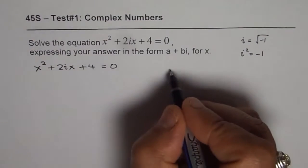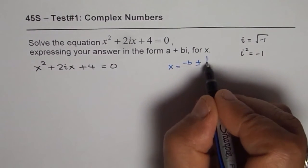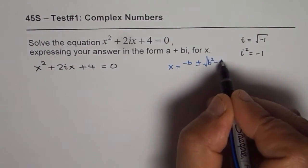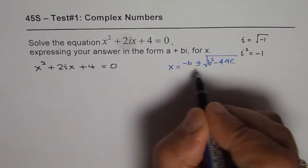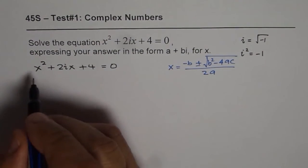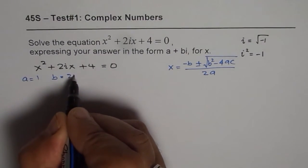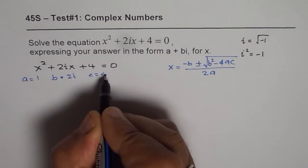Let me write down the quadratic formula here, which is x equals minus b plus or minus square root of b squared minus 4ac divided by 2a. Now in the given equation, a is 1, b is 2i, and c equals 4.